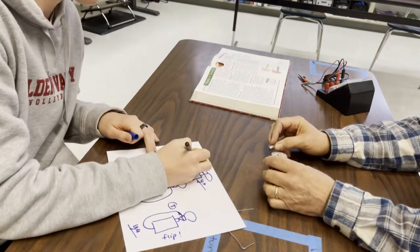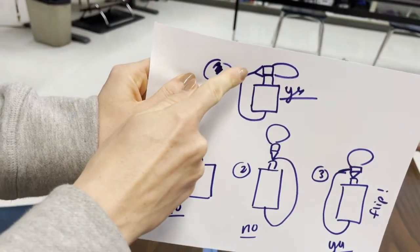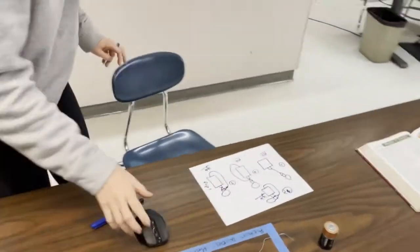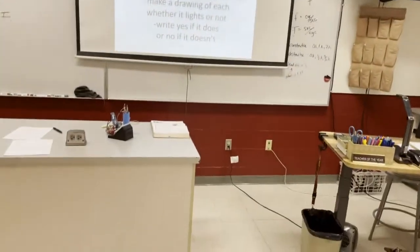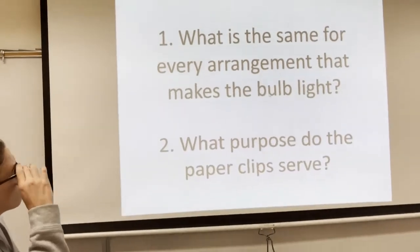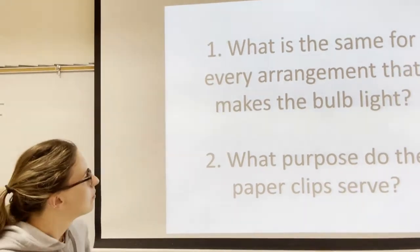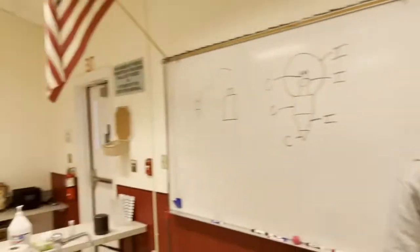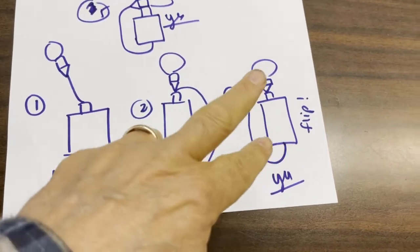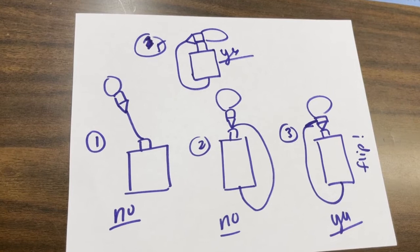So that's five different ones. What is the same for every arrangement that made the light bulb light? Looking at the results: no, no, yes, yes — we flipped it over — yes. What's the pattern here?